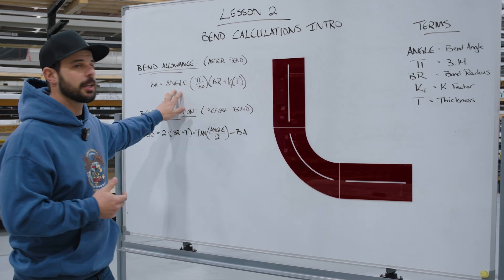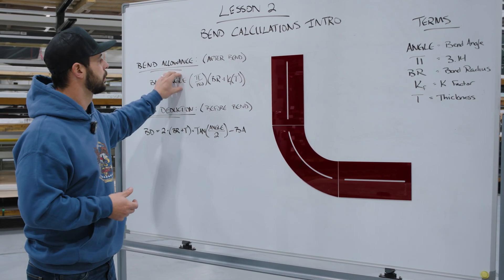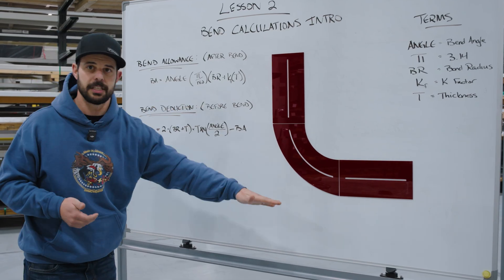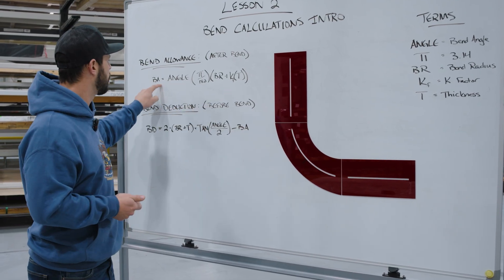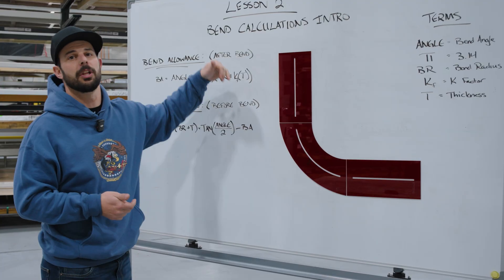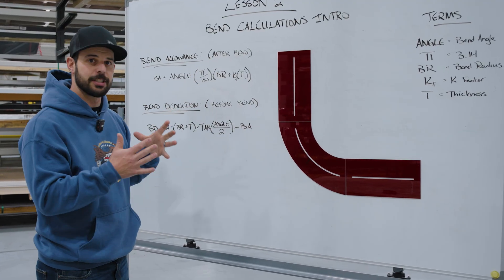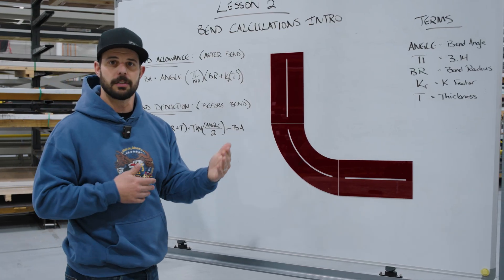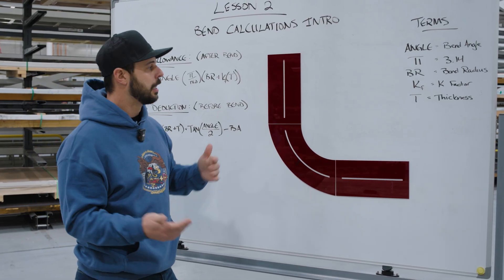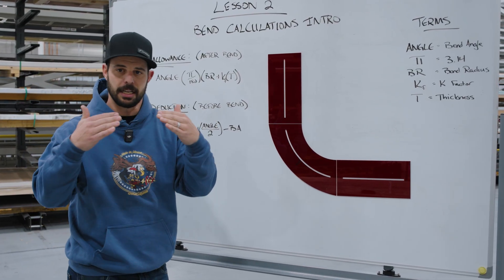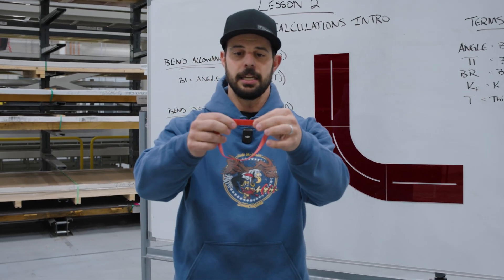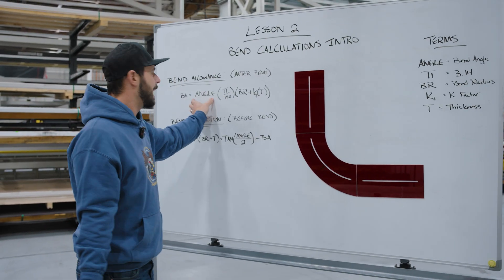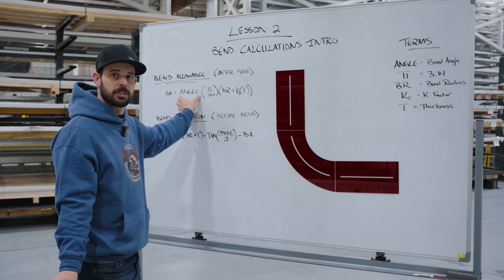One big thing to talk about is that if we change the angle of this bend, it changes how much bend allowance and stretch is in that bend, which then changes how much deduction we take out. If you go from, say, 20 degrees to 45 or 90 degrees, it's going to have more stretch. Twenty degrees is here, then 90 degrees, 180 degrees—I'm stretching that material more and more. As I add angle to this, it's a multiplier.